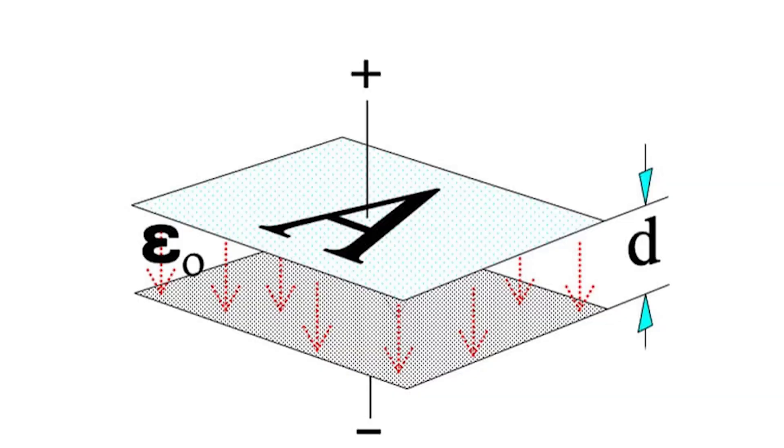The capacitance of a capacitor with parallel plates is relative to the area A of the smaller plate and an inverse ratio to the distance between them, D.